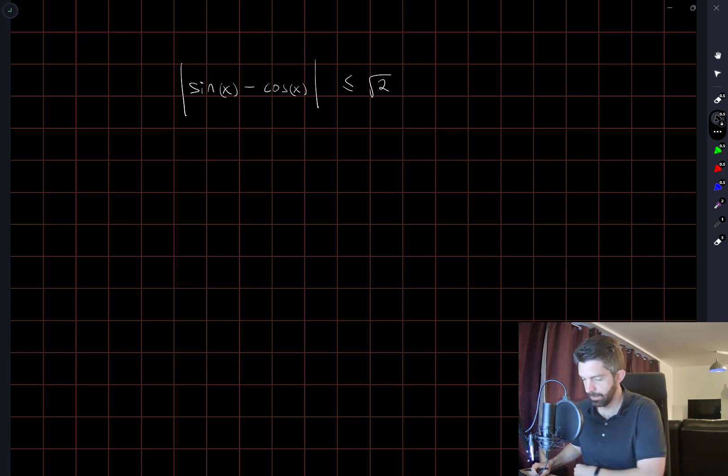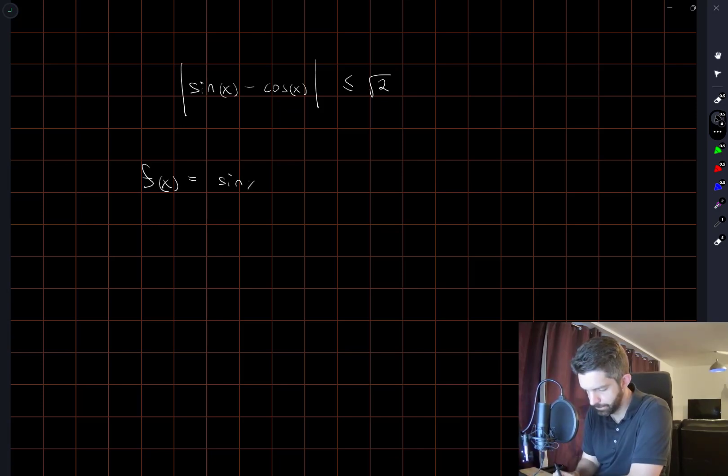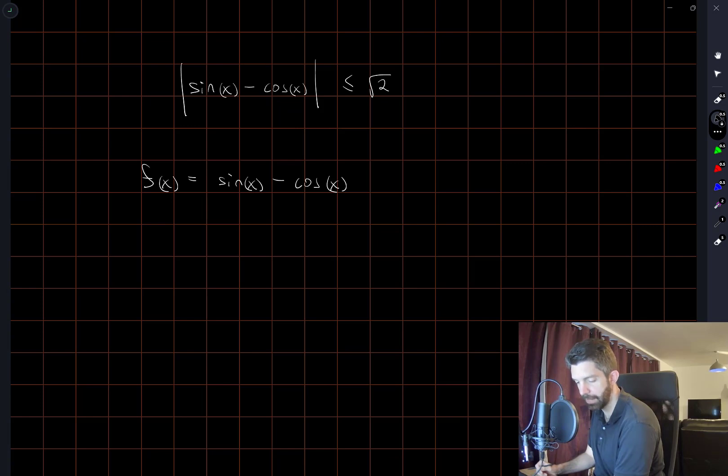So what might be the best way to do that? What I'm going to do is maximize this function f and hopefully we'll be able to show that the maximum of f is less than or equal to the square root of 2. Then I'm going to minimize the function f and show that the minimum is greater than negative square root of 2.